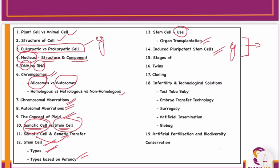You also have to do the stages of reproduction, and then the concept of twins. Moving on to the concept of cloning — how cloning is done and the different types of cloning in humans, sheep, and buffalos will be referred to in the next class.